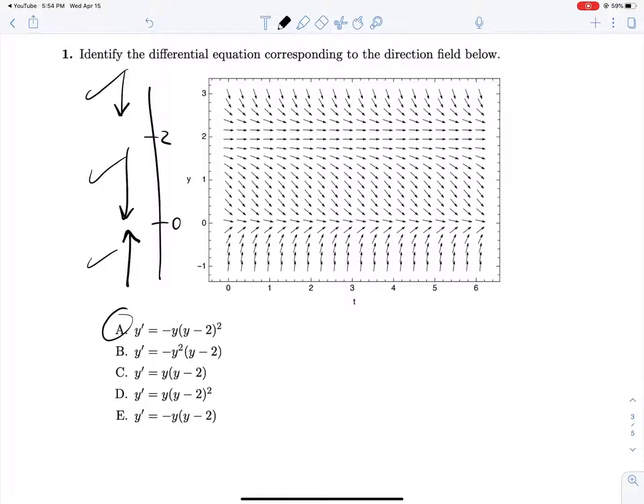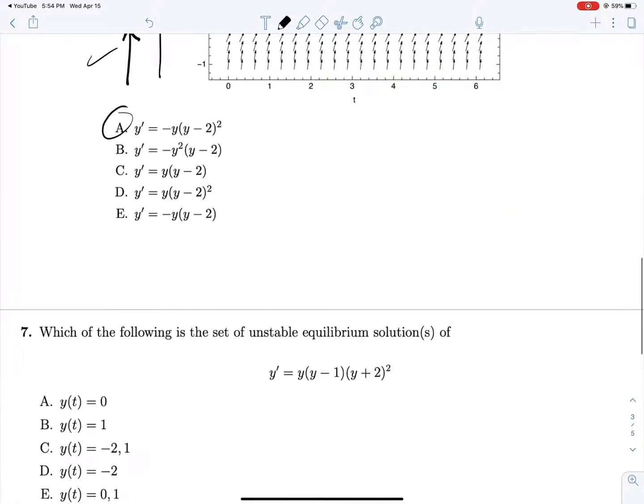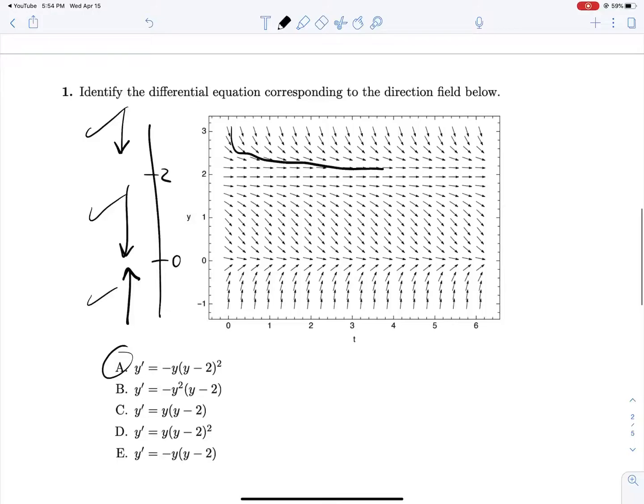So I hope you can see what I kind of meant about how being above 2 or below 2 doesn't change the sign of this term, and it also doesn't change the sign of this term. So you'll see the same behavior on both sides. But there's still that asymptotic behavior as you approach it. If you start above 2, your solution curve can never get down here, but it can approach 2 infinitely closely.